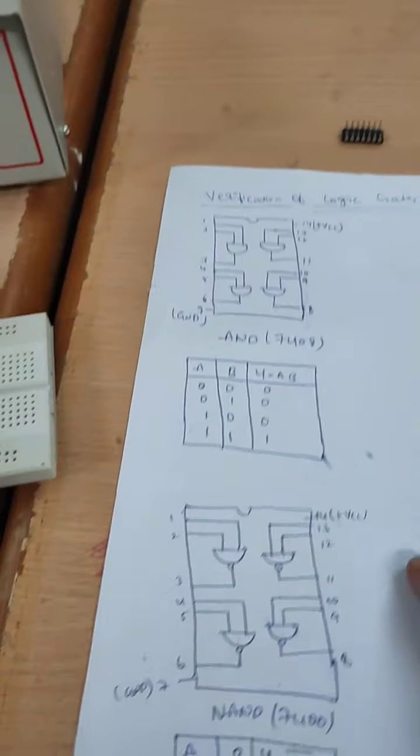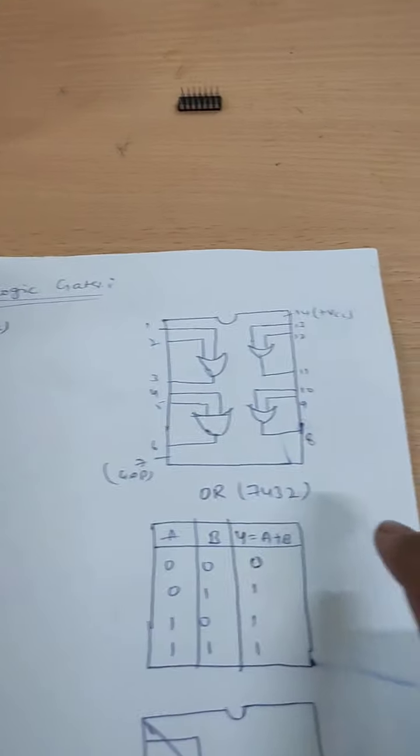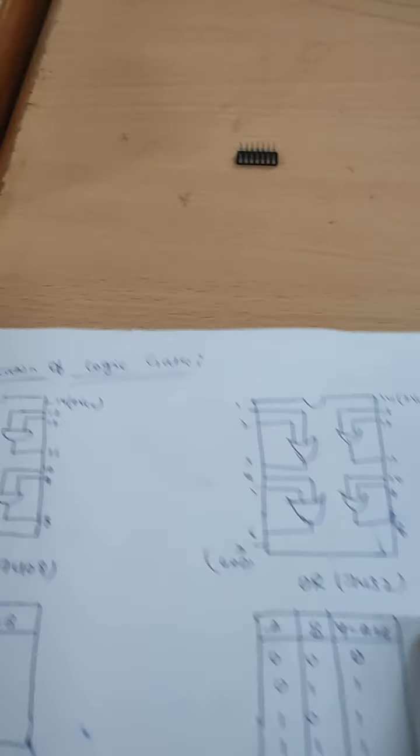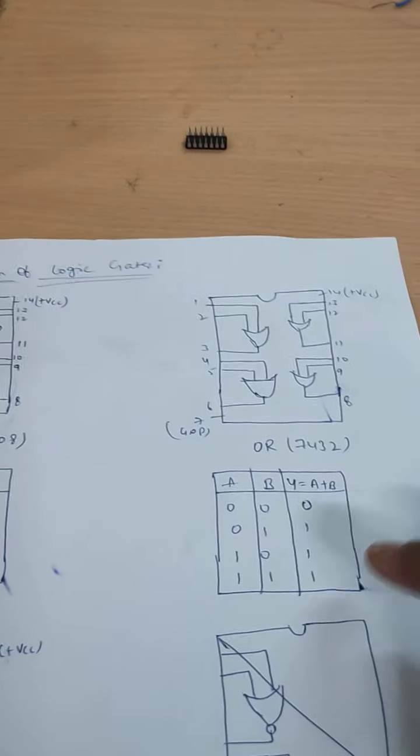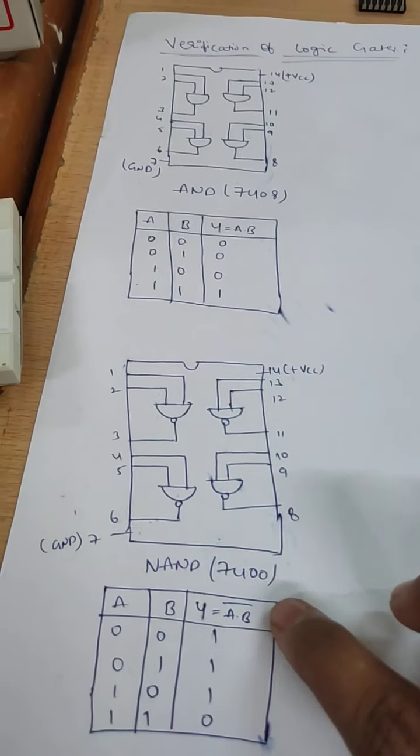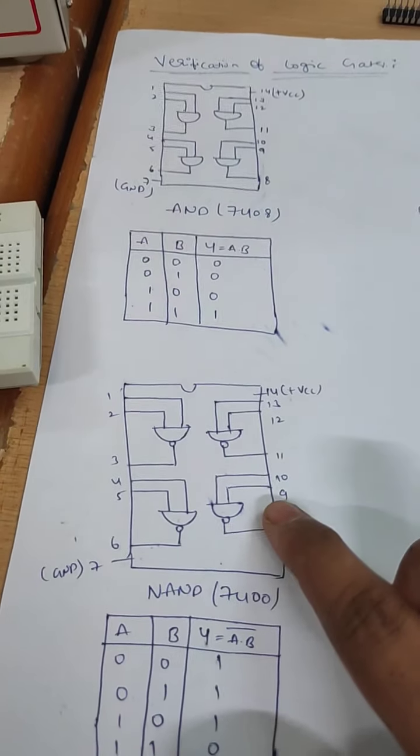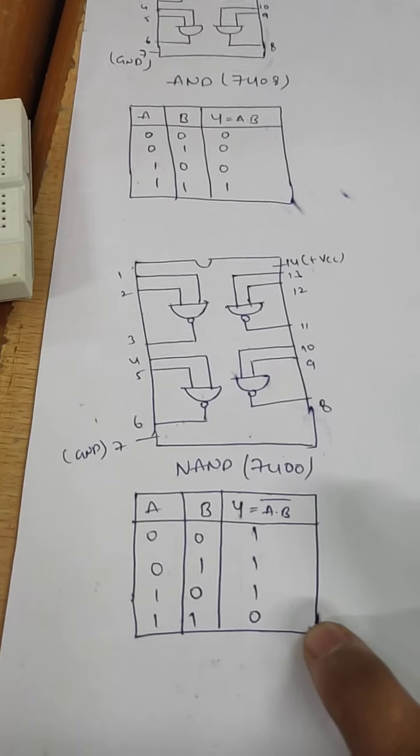This is 7432 pin configuration and truth table. As it is 7408 pin configuration, but the truth table is different. And here, this is the NAND gate, 7400 pin configuration and this is the truth table.